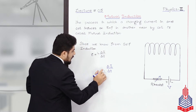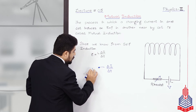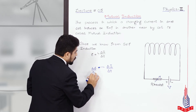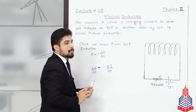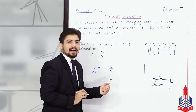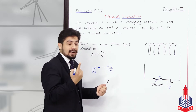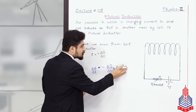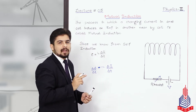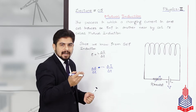Now, this changing current with the passage of time will give rise to changing flux with the passage of time. Because we know that every current-carrying conductor has a magnetic field — a curling magnetic field around it. So, if it is a constant current, then it will be a constant magnetic field and it will be a constant magnetic flux, right dear students?